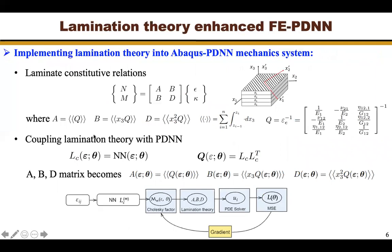To enable Abaqus-PDNN to learn the laminar constitutive law based on laminate surface response, we propose to couple lamination theory with Abaqus-PDNN mechanic system. The laminar constitutive law can be represented by the ABD matrix, and the ABD matrix are defined here. To couple the lamination theory with PDNN, we let the neural network learn the lower triangular matrix of the Q matrix. This Q matrix will be used to form the ABD matrix. Thus, the ABD matrix will be a function of the neural network parameters. This data flow can be summarized in this figure.